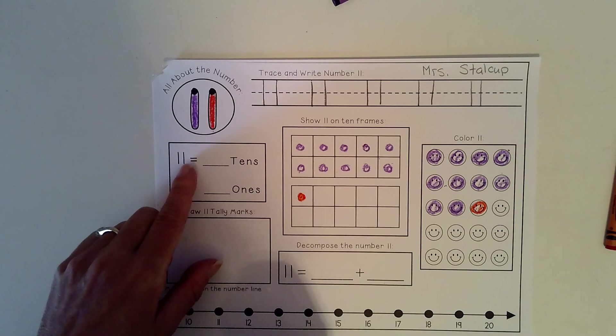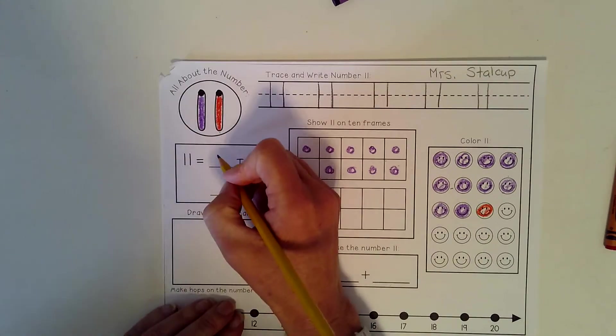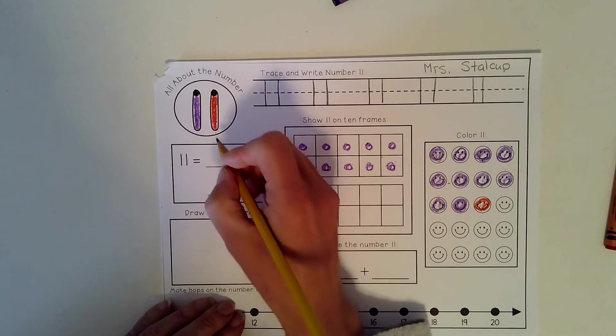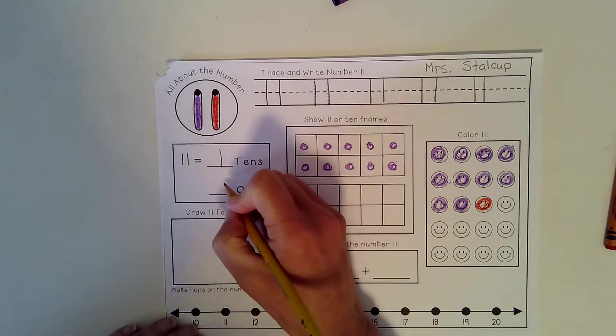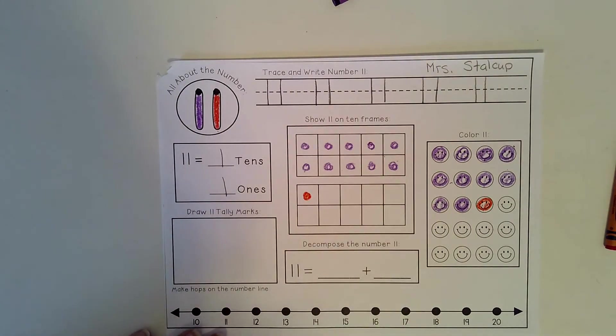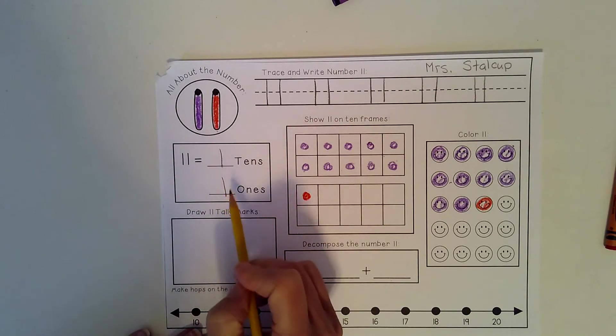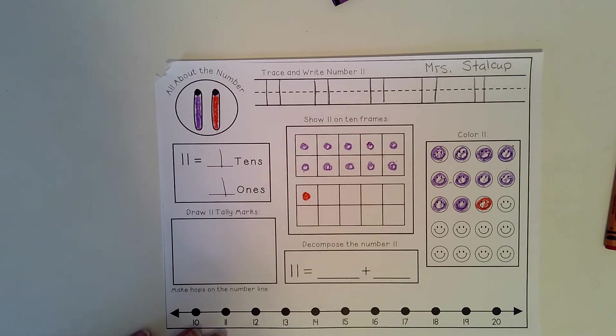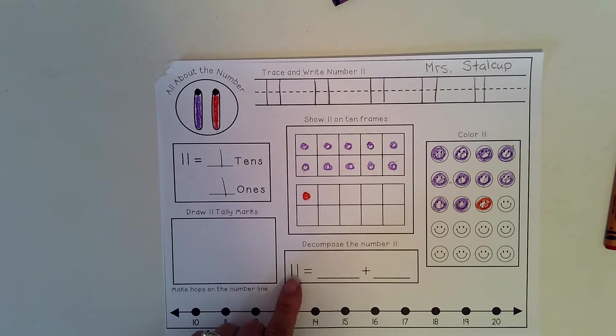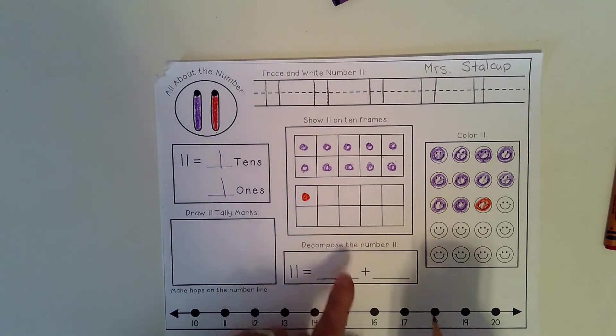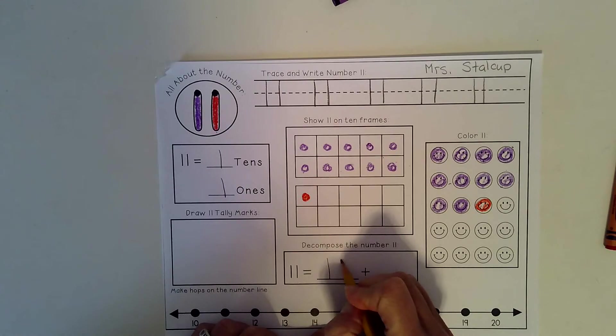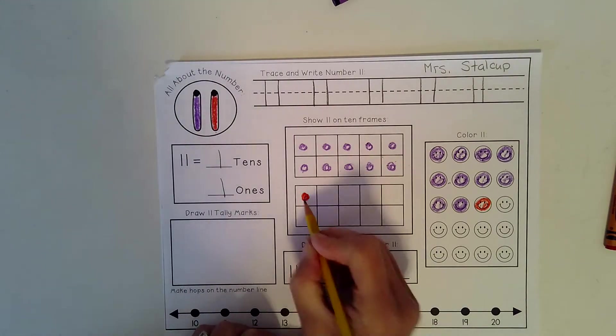So 11 equals 1 ten. I'm going to take my pencil again. 1 ten and one 1. 11 equals 1 ten and one 1. Another way to say that is 11 equals 10, here's my 10, plus 1.